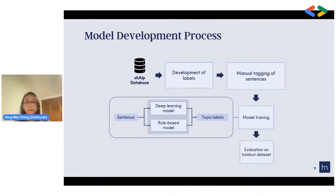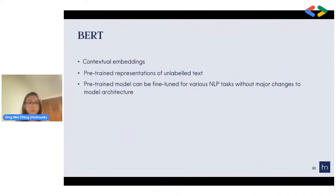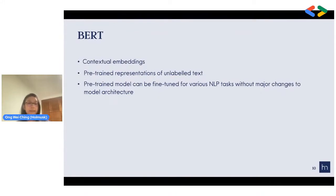We evaluate the models on a held-out test set. In today's sharing, we focus more on the deep learning model. The deep learning model we use is called BERT, which is a powerful state-of-the-art model able to understand contextual information very well, because it's been pre-trained on a huge corpus. After building this BERT pre-trained model, we can fine-tune it on various NLP tasks without major changes to the model architecture, including for information extraction.